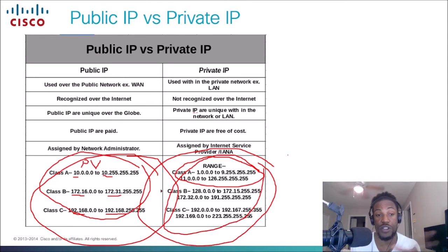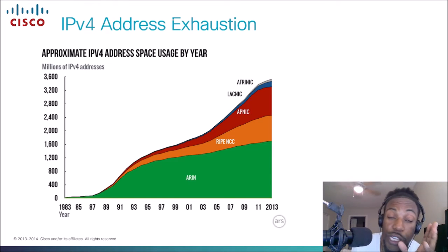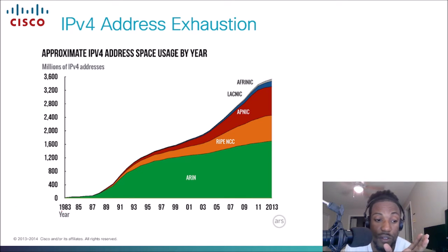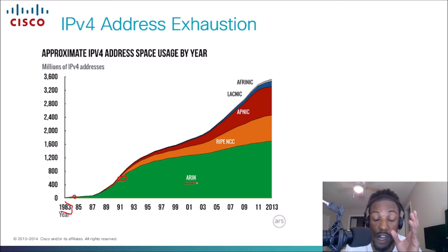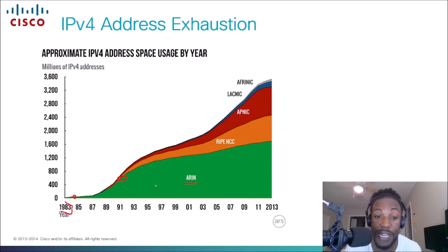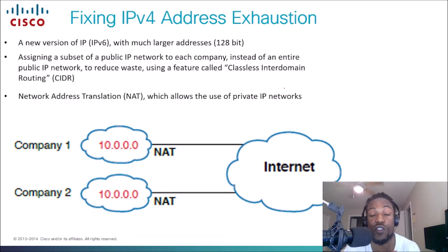So the IANA and regional registries manage public IP addresses, while we manage private IP addresses internally — those starting with 10, 172.16–172.31, and 192.168. The reason we needed private IP addressing is because when the Internet started growing rapidly in the early 1990s, the RIRs were handing out IP addresses quickly, and we started running out of IPv4 addresses.